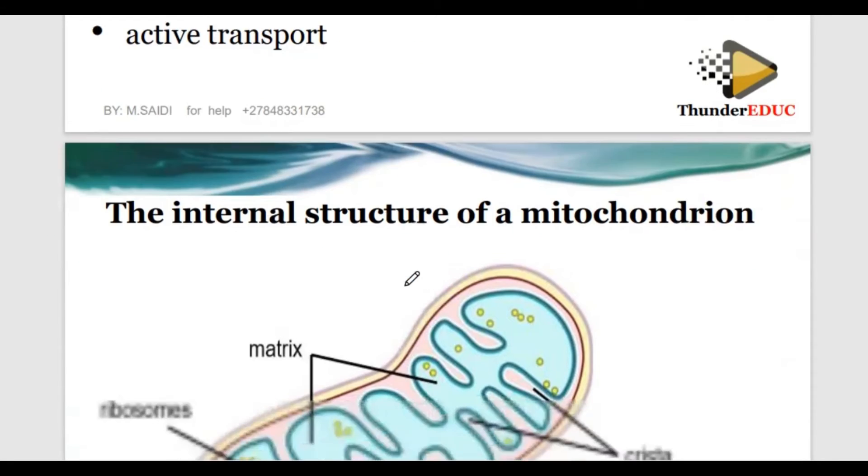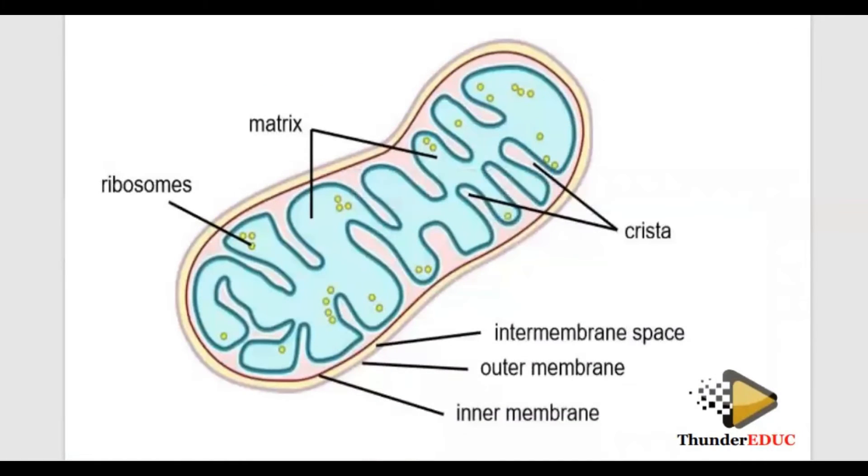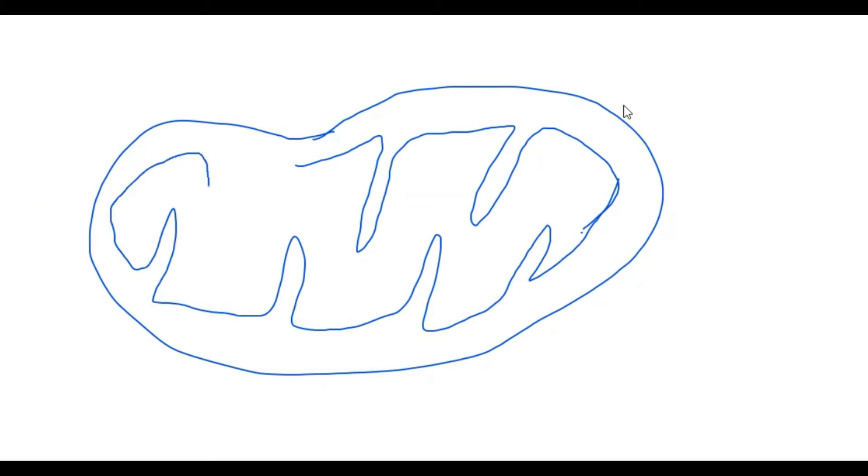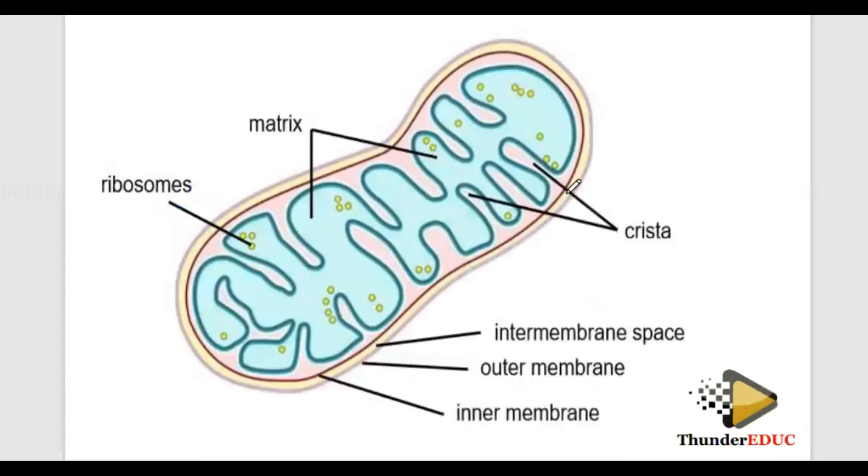Where does respiration take place? Respiration takes place inside a structure called a mitochondrion. The mitochondrion is an organelle. If you look at it, it has a sausage shape. It has an outer membrane which is smooth, but it has an inner membrane and the inner membrane is enfolded. The inner membrane is enfolded to increase the surface area for this reaction to take place.